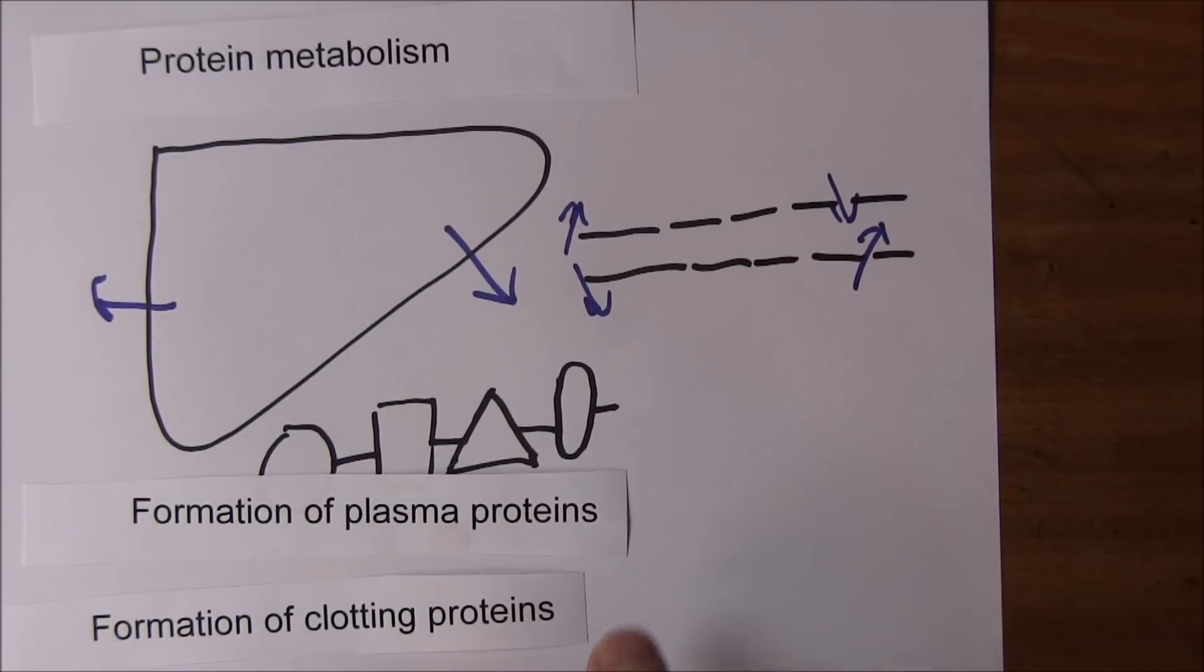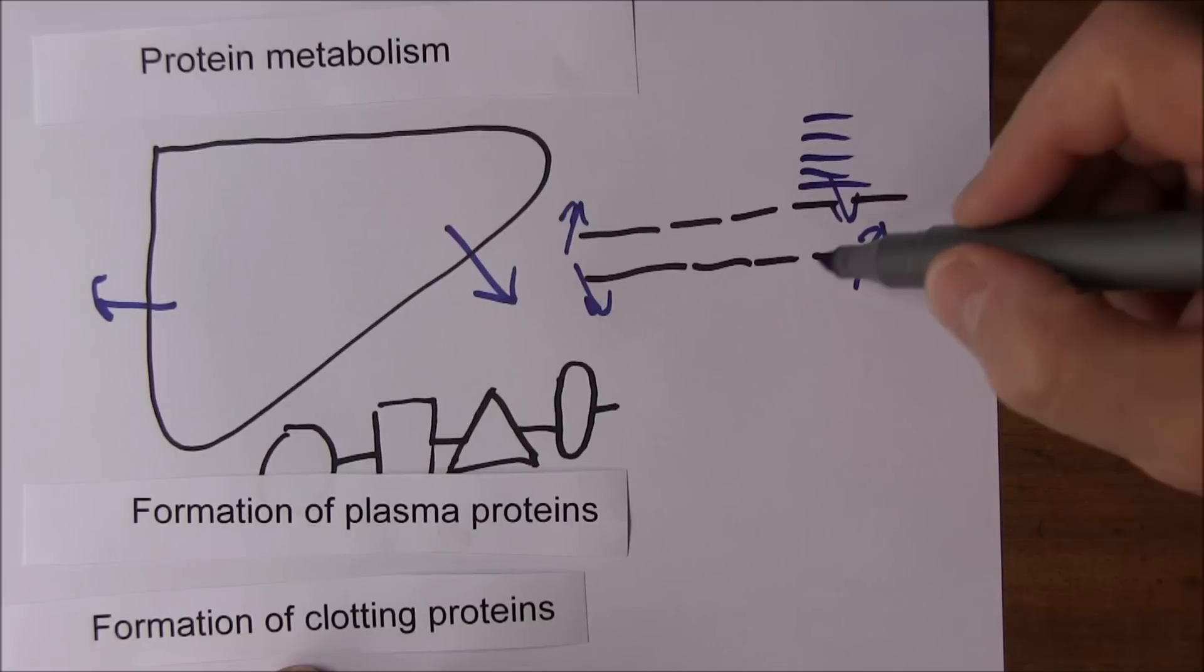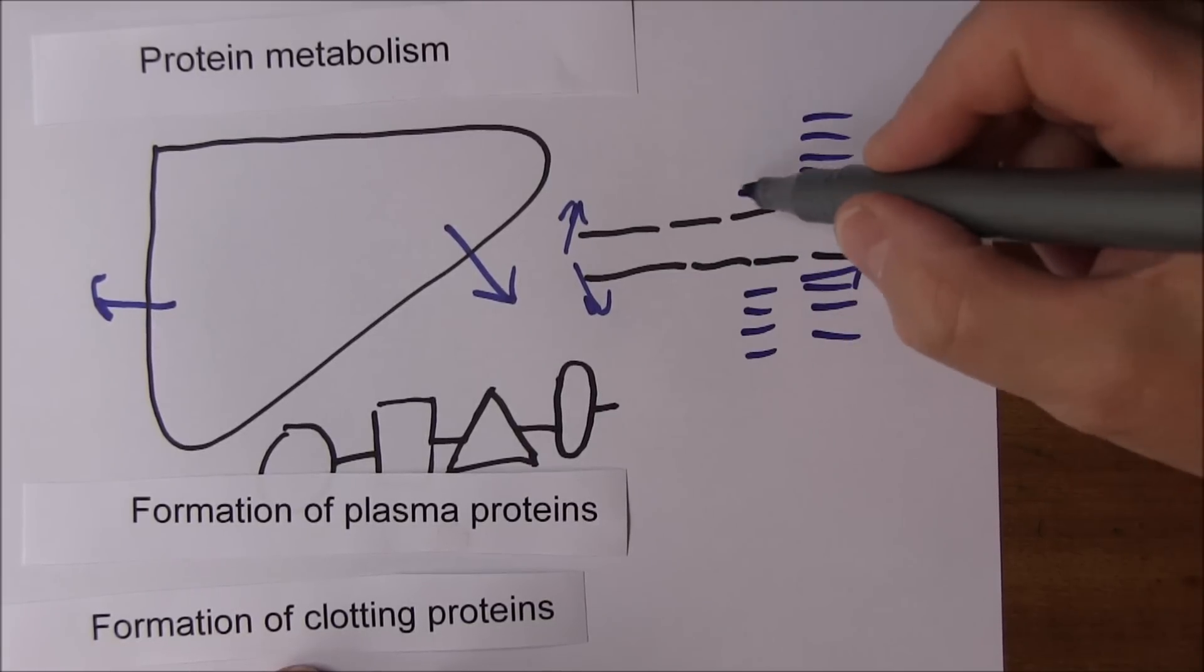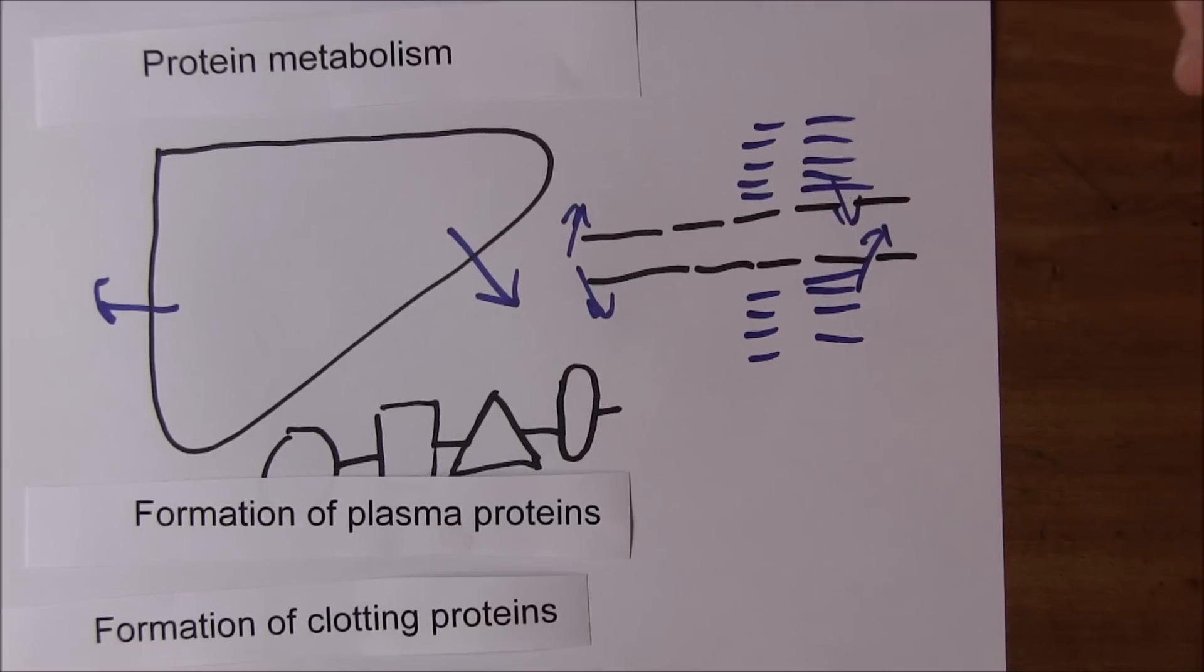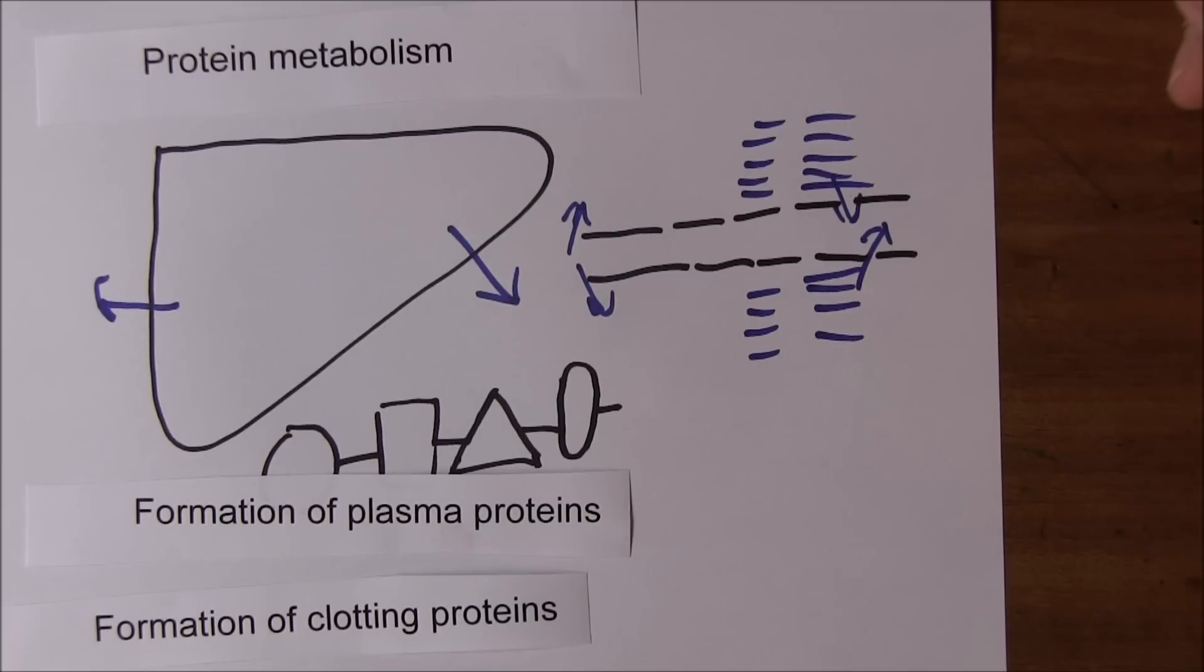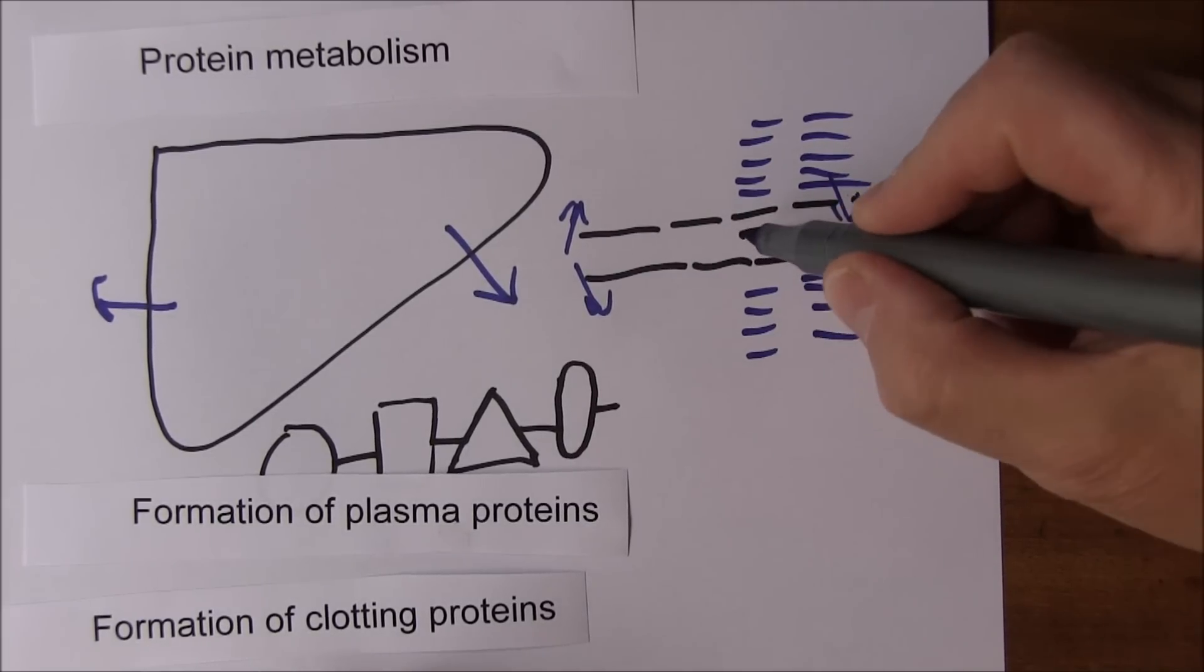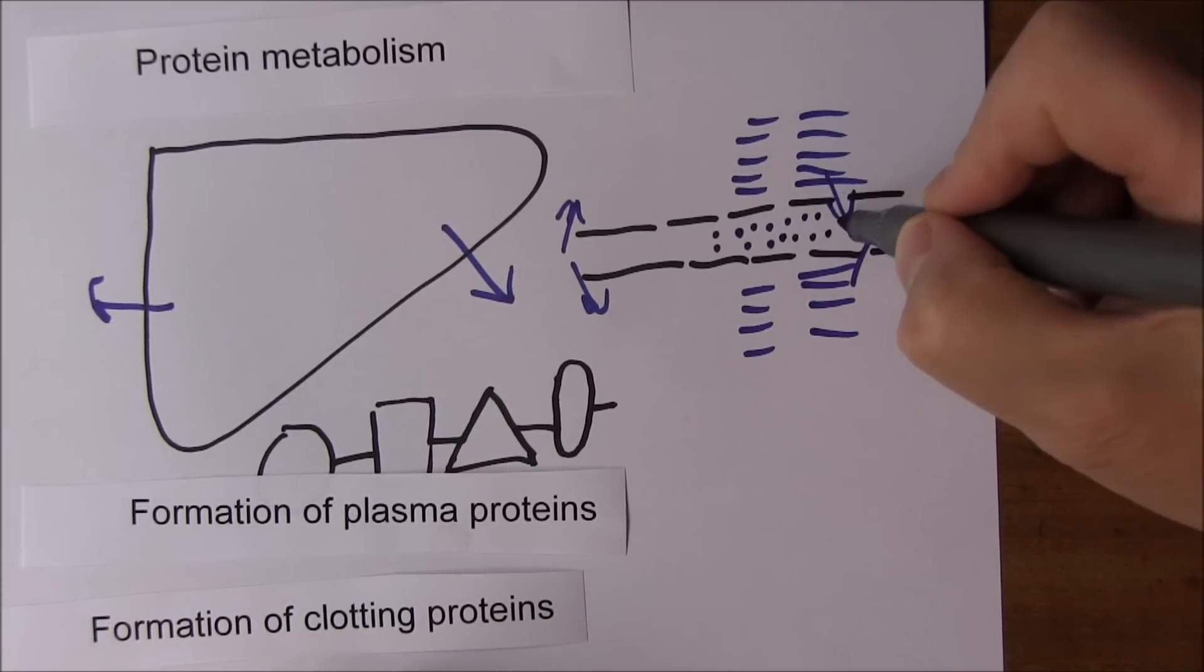If we're short of plasma proteins, particularly the albumin produced by the liver, then this is not going to be sucked back in and we'll be left with edema. So patients who are hypoproteinemic often become edematous because they're not sucking this back in. This is why you'll have seen pictures of malnourished children who have swollen tummies and they are edematous because they don't have the plasma proteins to suck the fluid back in.